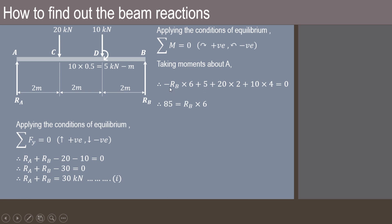Transfer this -RB × 6 on the other side, it will become positive value RB × 6. So 85 divided by 6 will be the value of RB, that is equal to 14.167 kN.